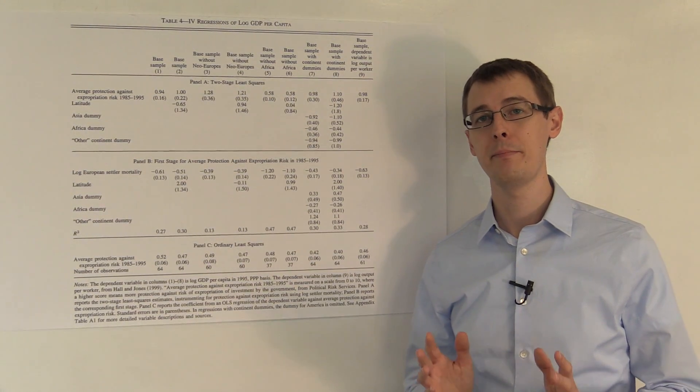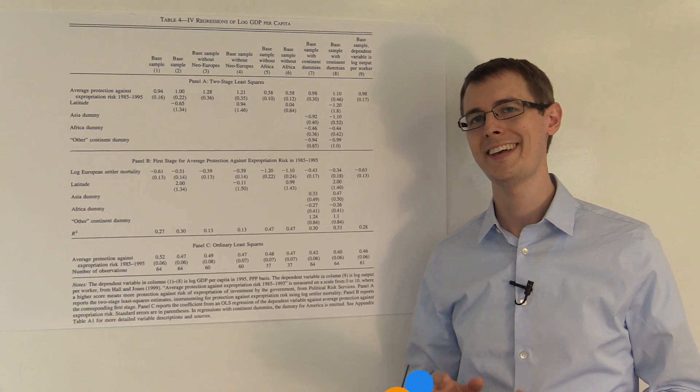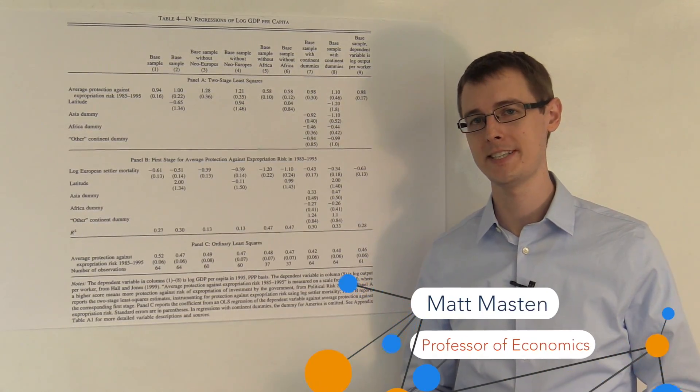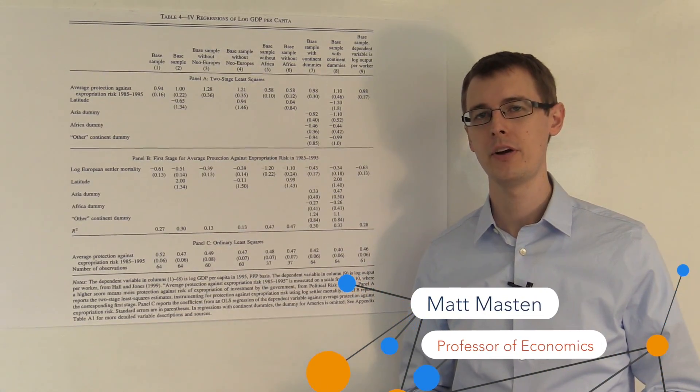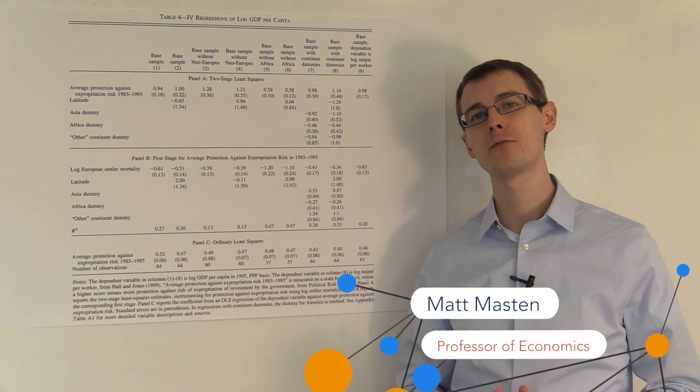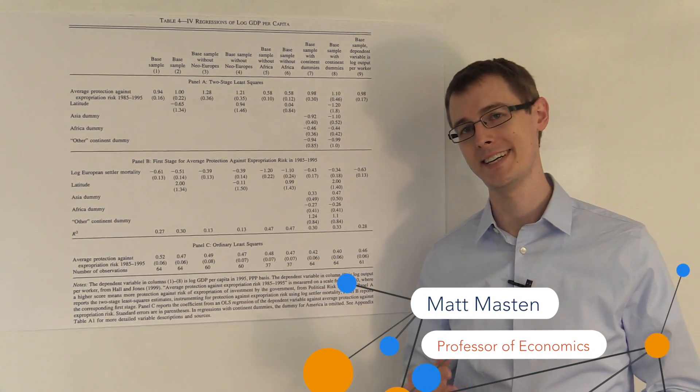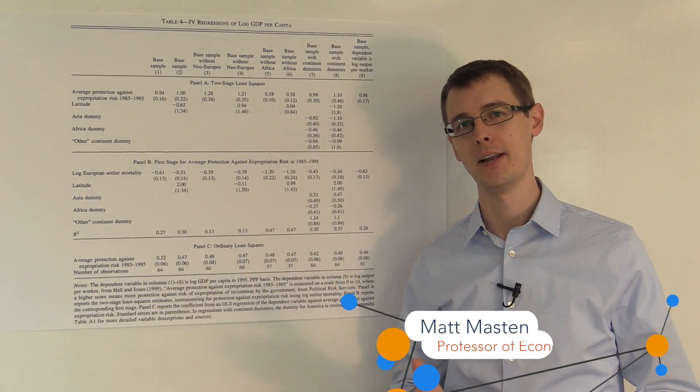Now we're ready to talk about the main results in the Acemoglu, Johnson, and Robinson paper on the effect of property rights on economic development.